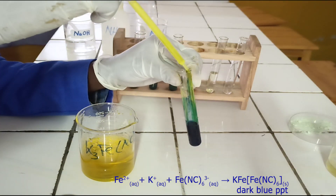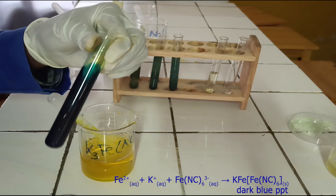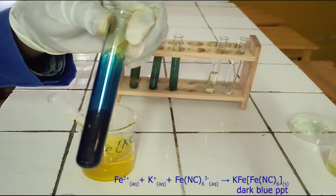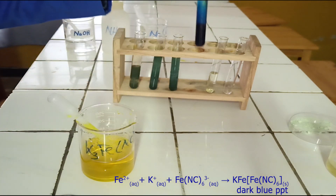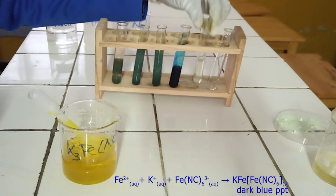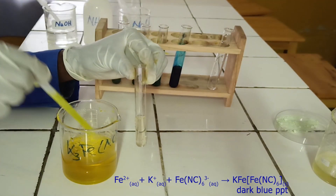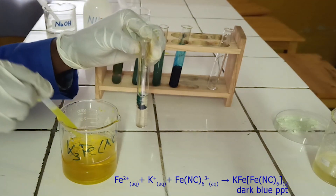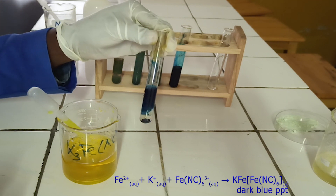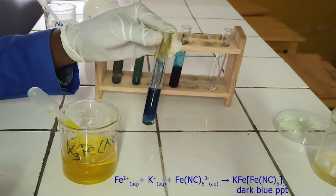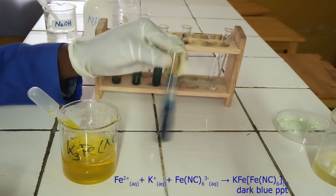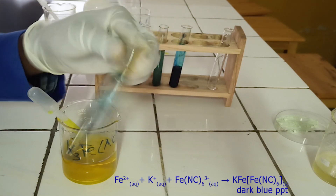Below, there is the ionic equation for this reaction. I repeat the confirmatory test — look carefully at what is going on. As you see, potassium hexacyanoferrate(III) reacts with iron(II) ion to form a dark blue precipitate.